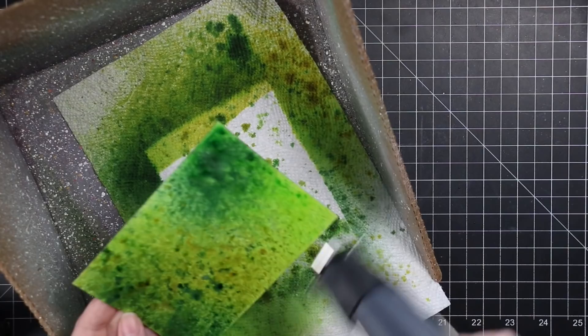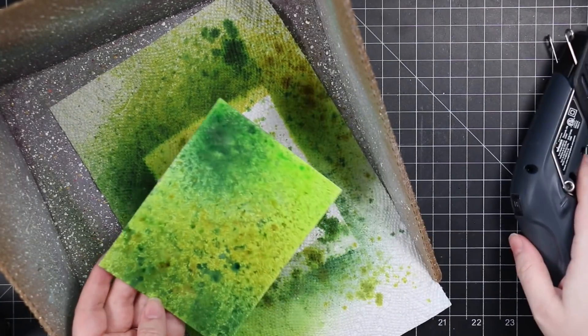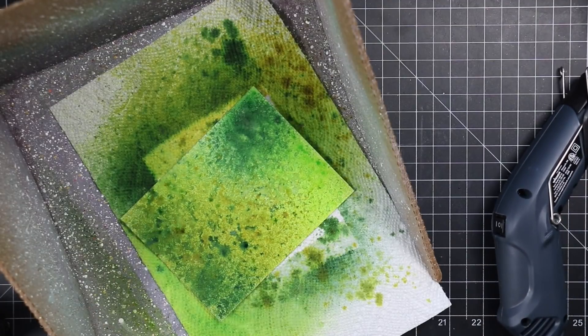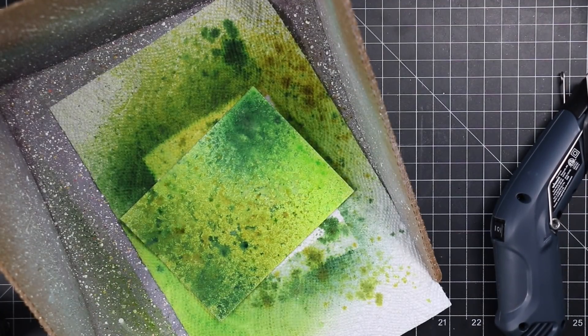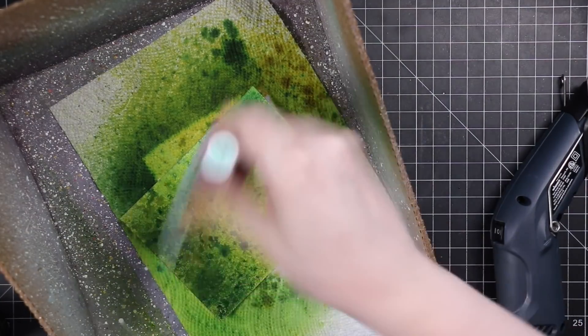So I was literally just experimenting. I used, I'll link to the specific colors, but for spray stains I was using rustic wilderness, crushed olive, twisted citron and speckled egg. And then I also brought in a bit of speckled egg distress oxide spray.